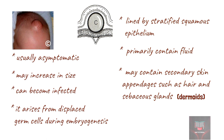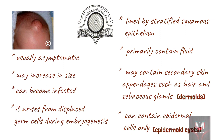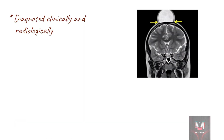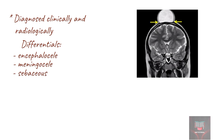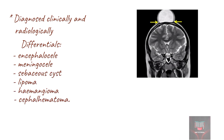In others, only epidermal cells are found and these represent epidermoid cysts. The diagnosis is made clinically and radiologically, especially to differentiate it from other differentials such as encephalocele, meningocele, sebaceous cysts, lipoma, hemangioma, and cephalohematoma. Surgical excision is necessary for cosmetic reasons and to confirm the diagnosis. Complete resolution is expected.